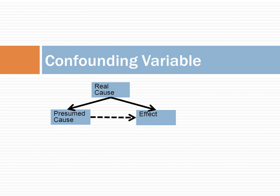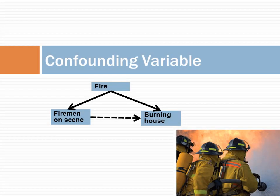Confounding variables affect both the explanatory variable and the response. If confounding variables are not measured, one might erroneously conclude that the explanatory variable is the cause of the response. For example, one may erroneously conclude that firemen cause fires. Obviously, the firemen are associated with burning houses — they are always there when a house is burning. It's a mistake to think they are the cause of the fire. Both they and the burning house are co-occurring because of a third confounding variable: the actual fire.